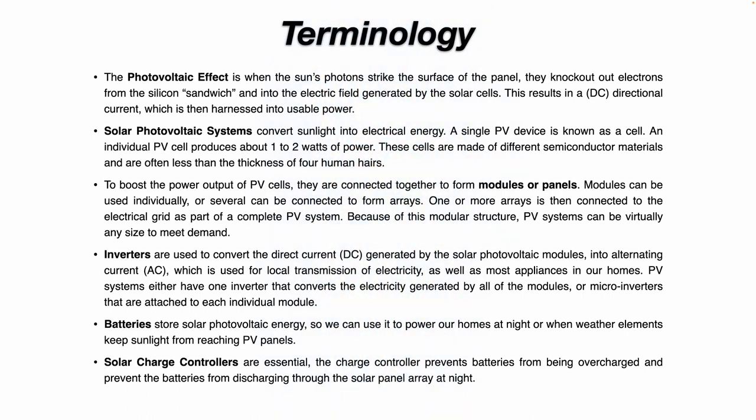Solar photovoltaic systems convert sunlight into electrical energy. A single PV device is known as a cell. An individual PV cell produces about one to two watts of power. These cells are made of different semiconductor materials and are often less than the thickness of four human hairs. To boost the power output of PV cells, they are connected together to form modules or panels. Modules can be used individually or several can be connected to form arrays. One or more arrays are then connected to the electrical grid as part of a complete PV system. Because of this modular structure, PV systems can be virtually any size to meet demand.